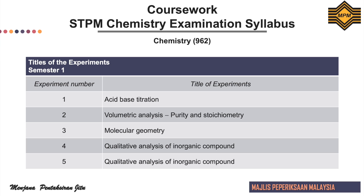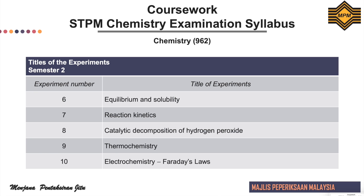As mentioned earlier in the scheme of assessment, candidates are required to conduct five experiments in each semester. For semester 1, the experiments are: 1. acid-base titration, 2. volumetric analysis — purity and stoichiometry, 3. molecular geometry, 4. qualitative analysis of inorganic compounds, and 5. qualitative analysis of inorganic compounds.